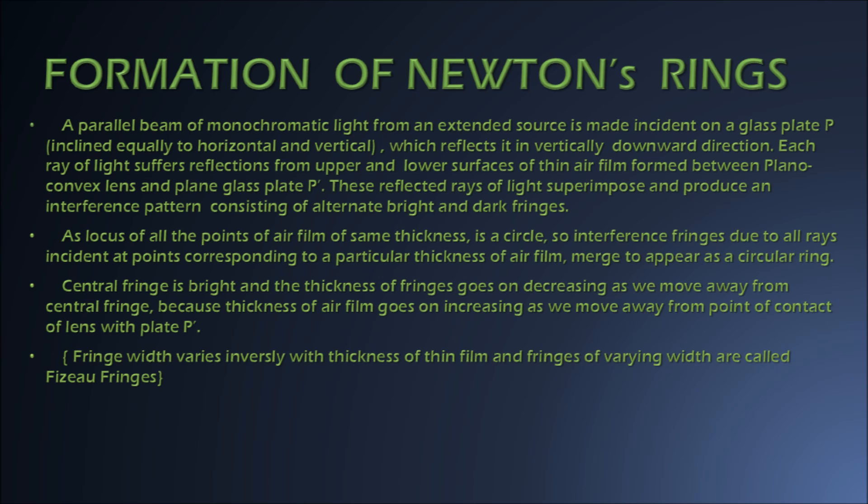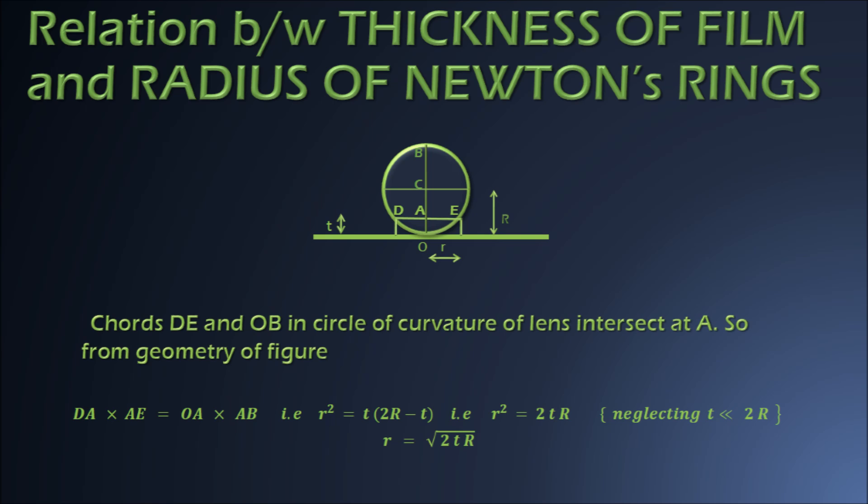The fringe width also varies inversely with the thickness of the thin film. Fringes of varying width are called Fizeau fringes. Now let us derive a relation between the radius of a particular Newton ring and the thickness of the air film corresponding to that ring.